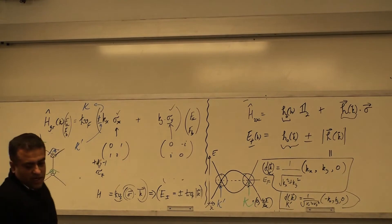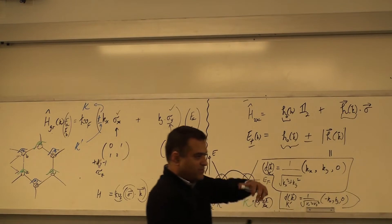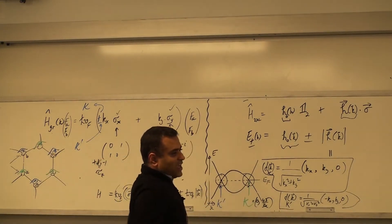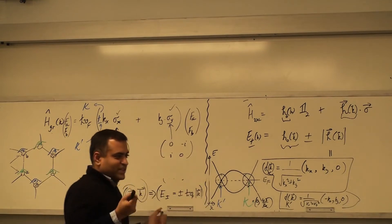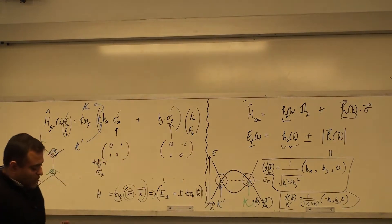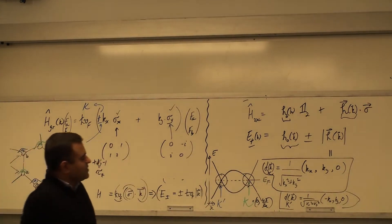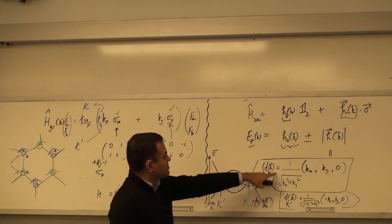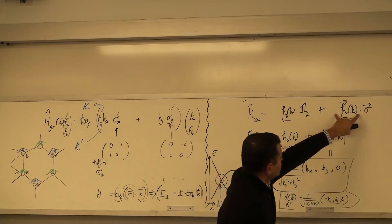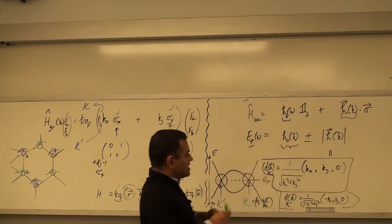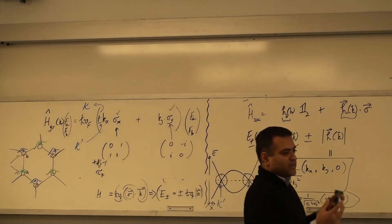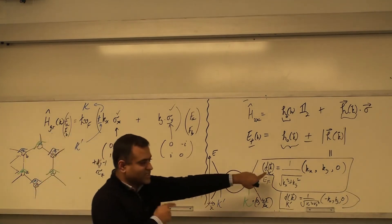Once you do the tight binding, you get eigenvalues of the form H_0 ± |H|. But this H is actually a vector, and I can find a unit vector from it. This unit vector tells you everything you need to know about the topological properties of the crystal — whether its Chern number is zero or one, whether it will have topologically protected edge states or not, whether it's a trivial ordinary insulator with no edge states — all of that is buried inside this quantity.